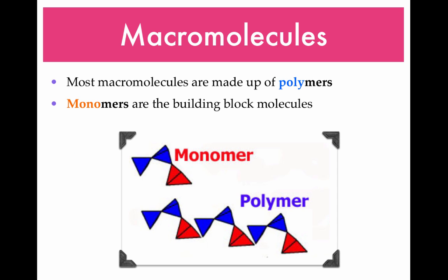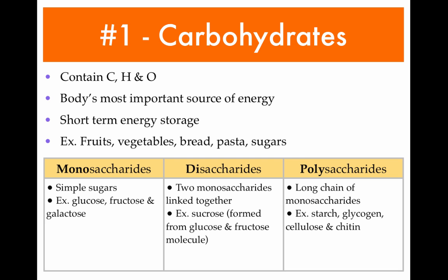Most macromolecules are made up of polymers. Monomers are the building block molecules of polymers, so if you were to combine a bunch of monomers together you would get a polymer. This next slide is the most important slide in this lesson, so make sure you copy down everything on this slide.